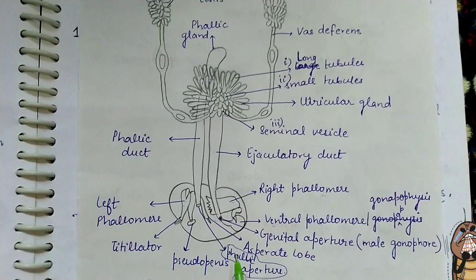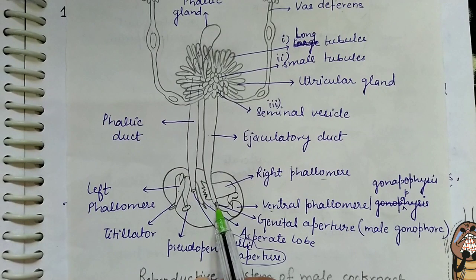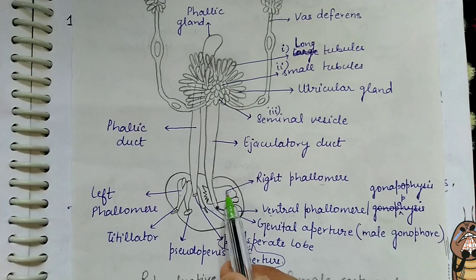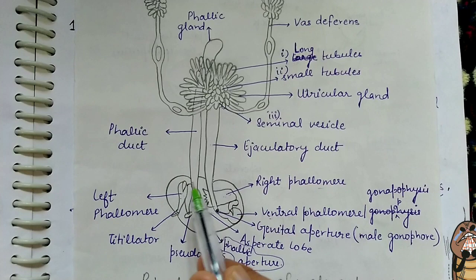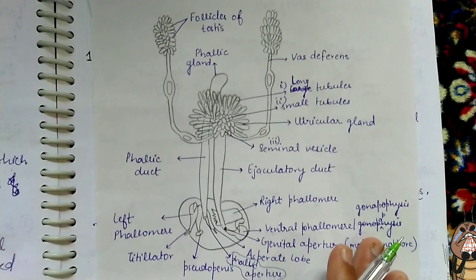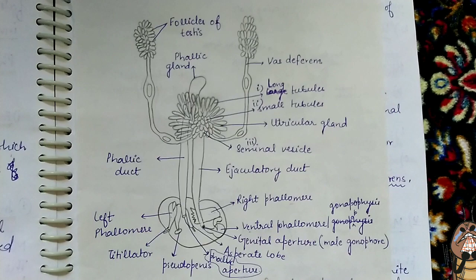Also, there is another gland known as the phallic gland, with a pipe-like structure called the phallic duct that ends in the phallic aperture. Around the genital aperture there are chitinous structures present, known as phallomeres, which represent the external genitalia of the male cockroach.